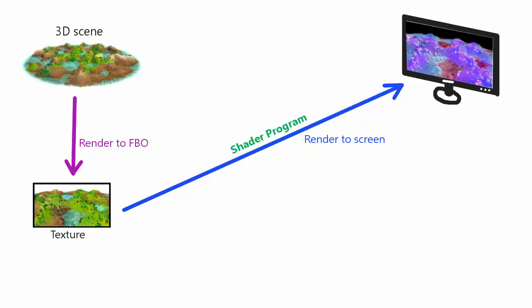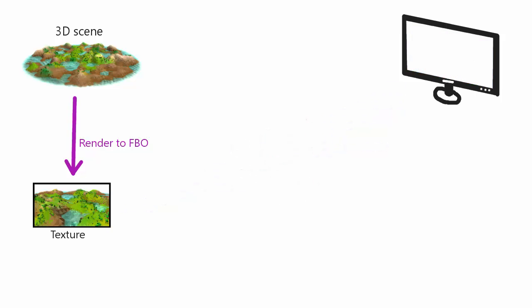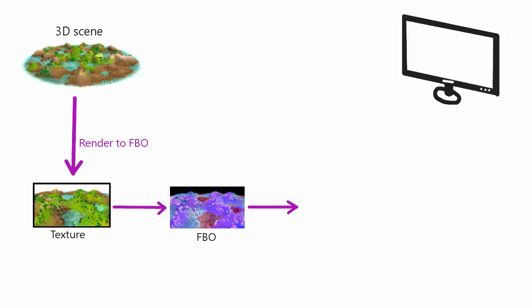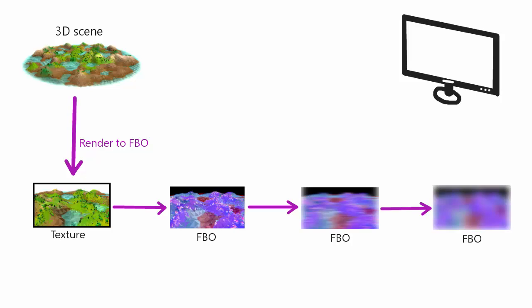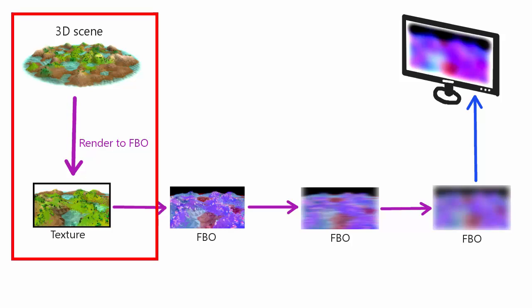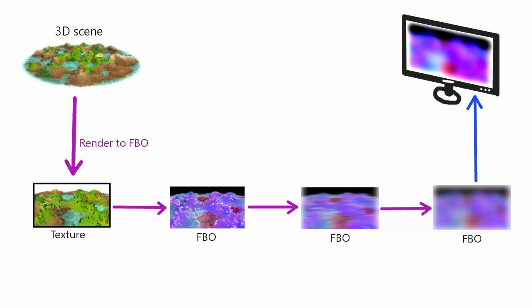Also, our post-processing pipeline doesn't just have to have one step. Instead of rendering that full-screen quad onto the screen, we could render it to another FBO, giving us a new texture. We can then render a textured quad with that image onto another FBO using a different shader program to apply a different effect, such as a horizontal Gaussian blur. We can repeat this as many times as we want with different effects — for example, a vertical Gaussian blur, and finally render the result onto a quad on the screen applying a shader that changes the contrast. Importantly, we only render the 3D scene once to the first FBO; all the extra steps just require a single textured quad to be rendered using a certain shader program to apply the effect.